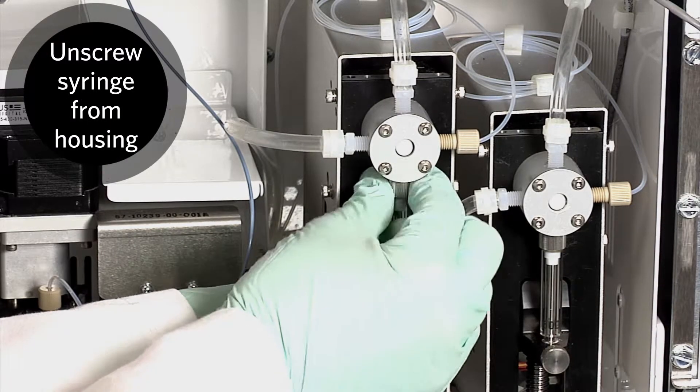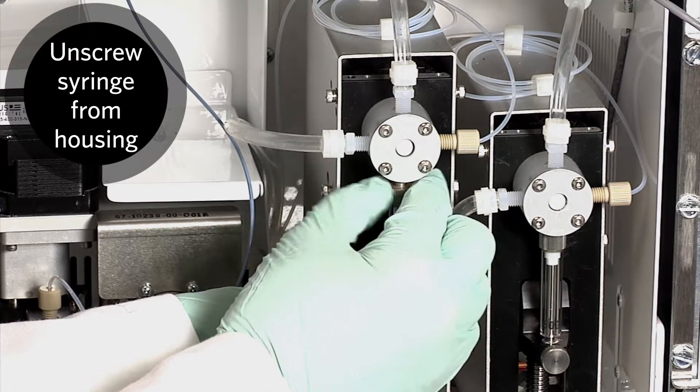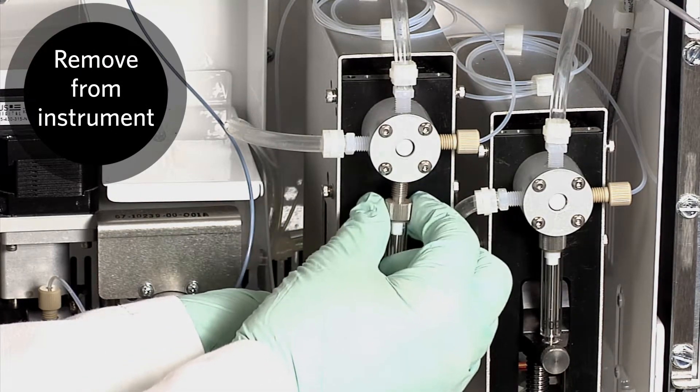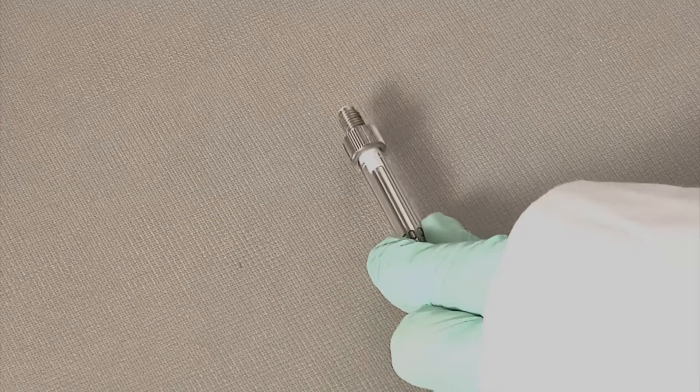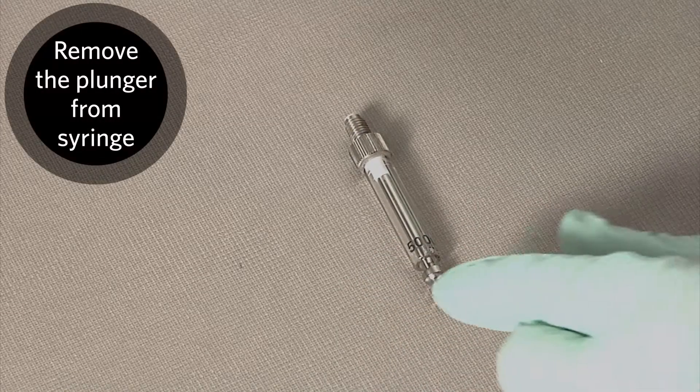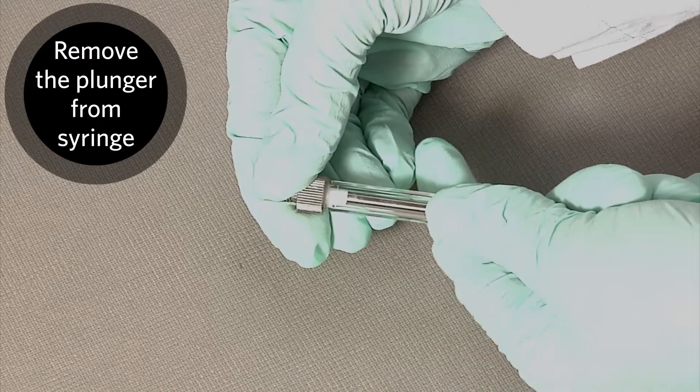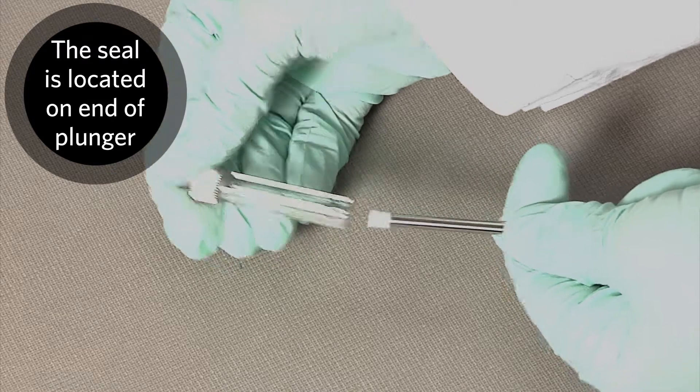Unscrew the syringe from the top of its housing. This will free the syringe from the instrument. Remove the plunger from the inside of the syringe. The seal is located on the end of the plunger.